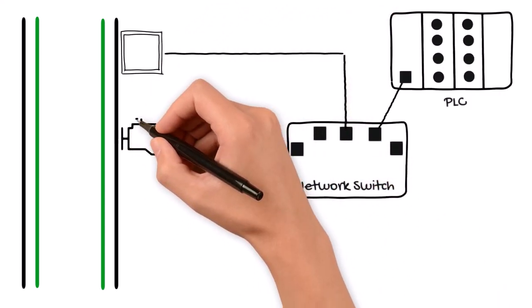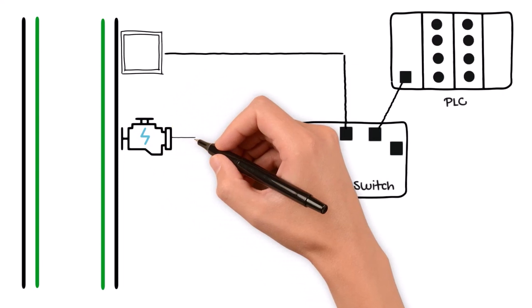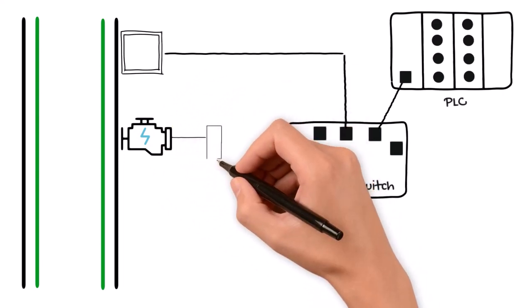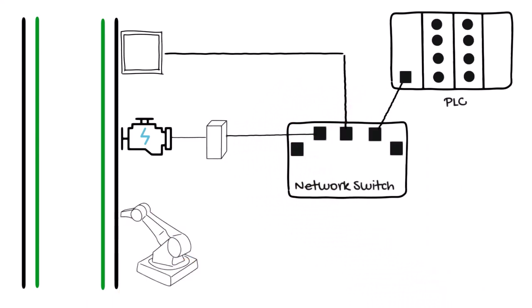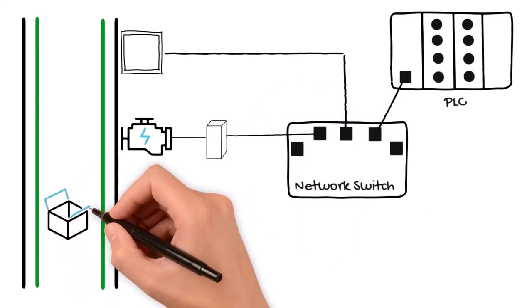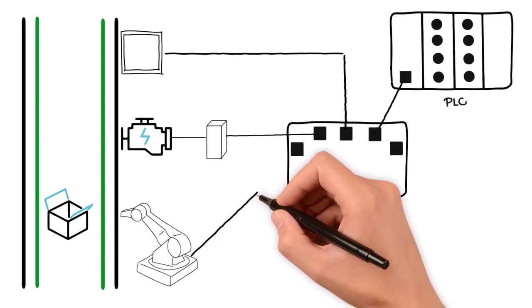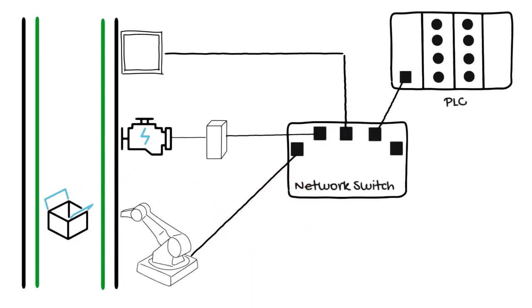It also has a motor controlling the position of the conveyor belt that's attached to a variable frequency drive or VFD that also communicates with the network switch. It probably also has a robot placing parts. You guessed it, that robot also communicates with the same network switch.